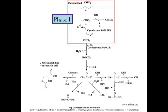This extremely reactive radical metabolite forms covalent adducts with enzymes and fatty acids of phospholipids. This can result in the loss of enzyme activity and may lead to lipid peroxidation.